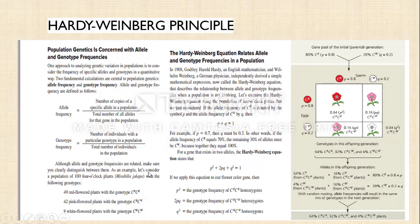For example, consider a population of 100 four o'clock plants: 49 are red-flowered with genotype CR CR, 42 are pink-flowered with genotype CR CW, and 9 are white-flowered with genotype CW CW.